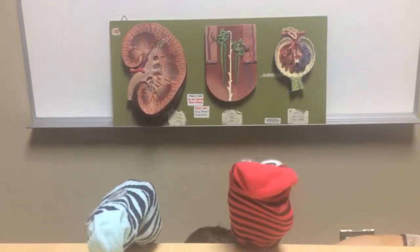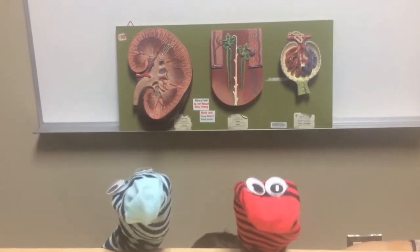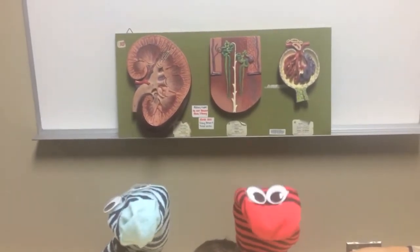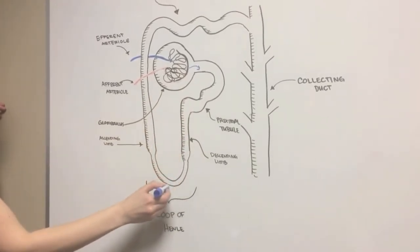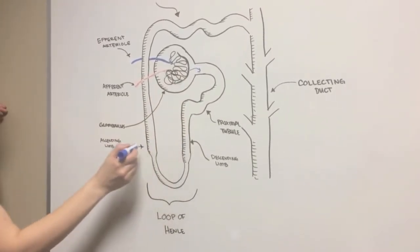Filtrate needs things taken out of it and put into it. To do this, it runs through a series of tubes, the first part being the proximal tubule, then the loop of Henle, which also consists of the descending limb and the ascending limb.